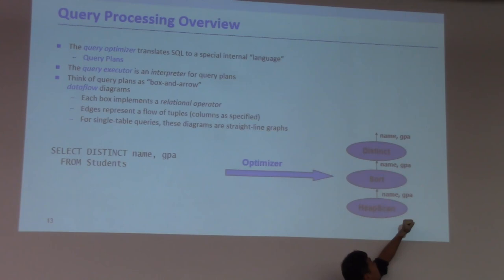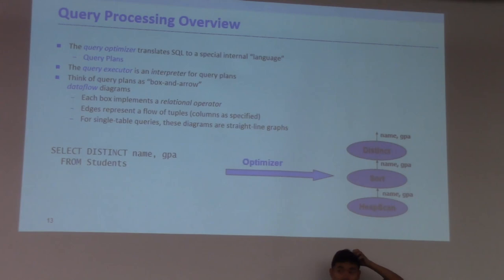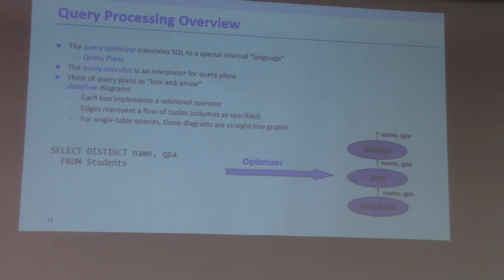Then I take these two attributes and submit them to a sort operator. By now you know this sort operator will be the external merge sort if data is large enough to not fit in memory; otherwise you use an internal memory sorting algorithm. And then finally, you apply the DISTINCT keyword to remove duplicates.